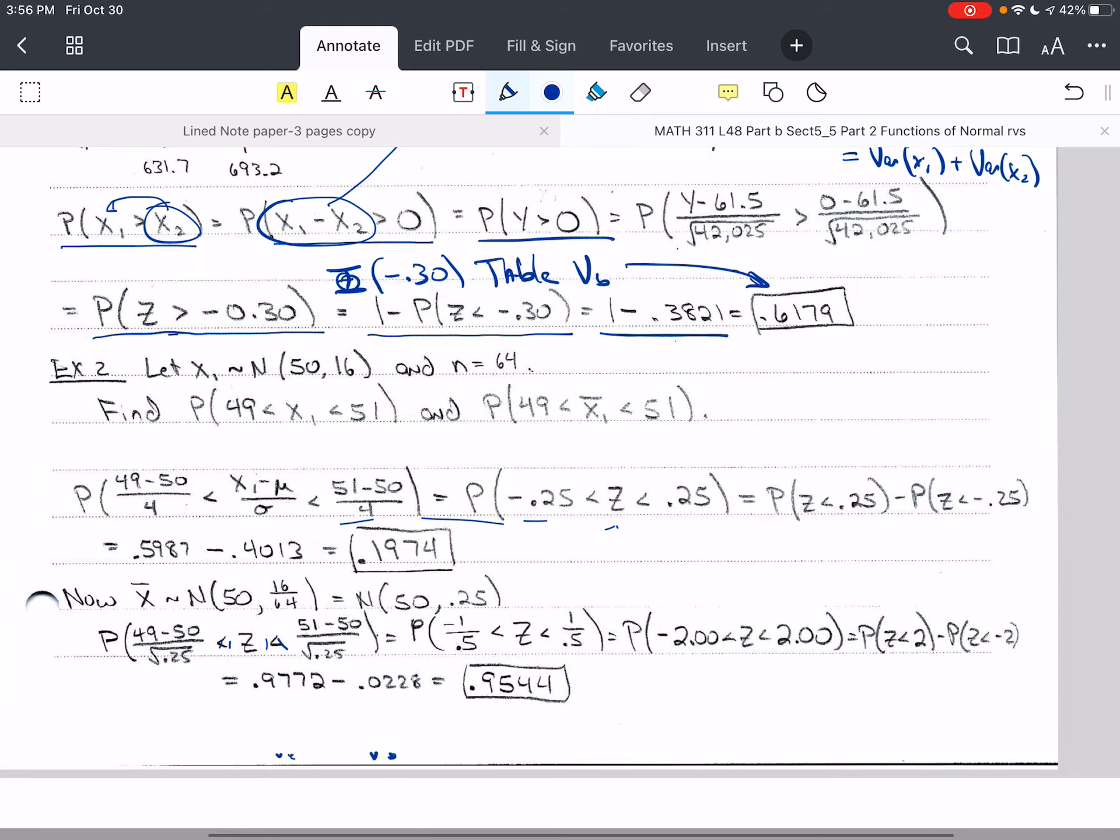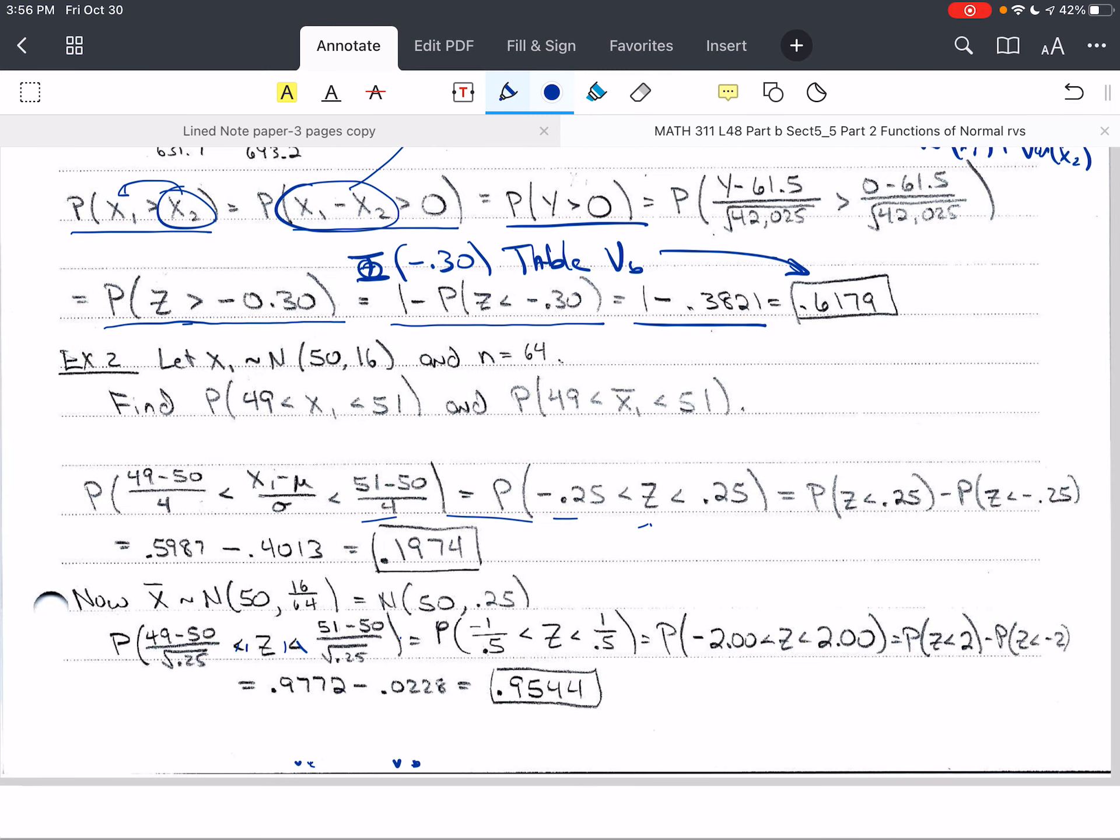Now, let's say that we have a completely different problem. And so we have x₁ has a normal distribution with mean 50 and variance 16. And we take a random sample of n equals 64. We want to find first, we want to find the probability that x is between 49 and 51.